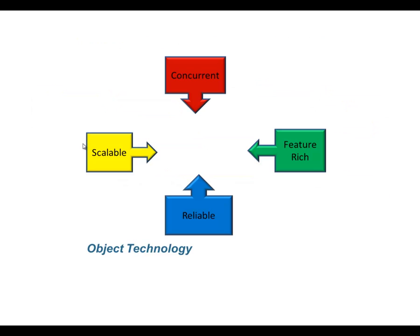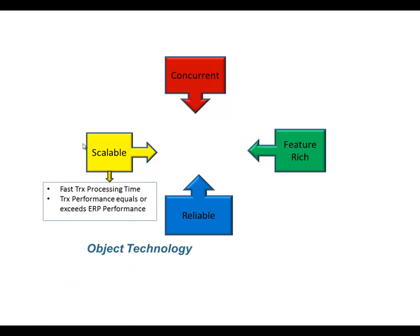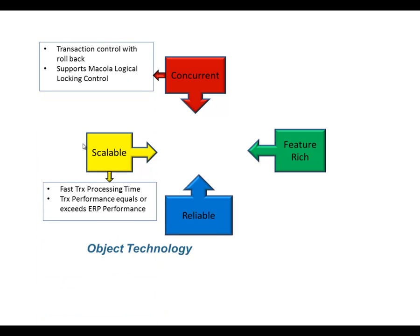Our object technology is not just a matter of writing transactions to Macola tables. There's a lot more to building an ERP-type scalable transactional model. First, the transactions have to be very scalable and very fast — transaction performance needs to equal or exceed the underlying ERP product. We need to support transaction control, so if a transaction ends up in a lock collision or cannot complete due to an error, that transaction needs to be able to do an effective rollback.